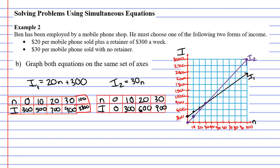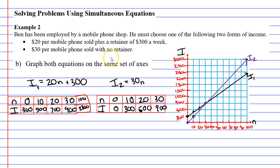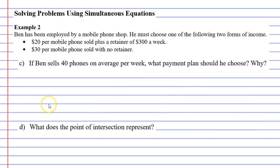Let's now move on to questions C and D. Question C says, if Ben sells 40 phones on average per week, what payment plan should he choose? Why? So going back to our graph, this is where he sells 40 phones. And if we go up here, you'll see that he gets more money with the purple than he does with the black. More money with equation two than equation one. So we'll write down here the second plan.